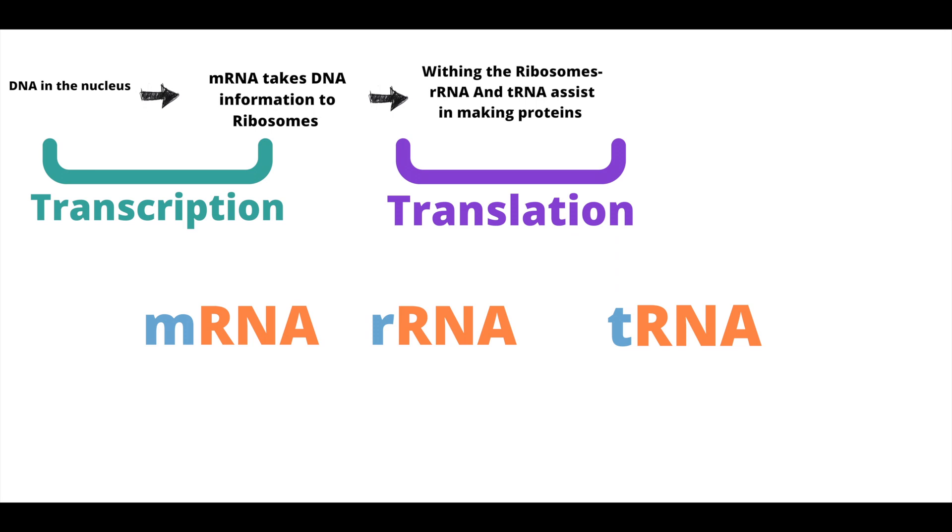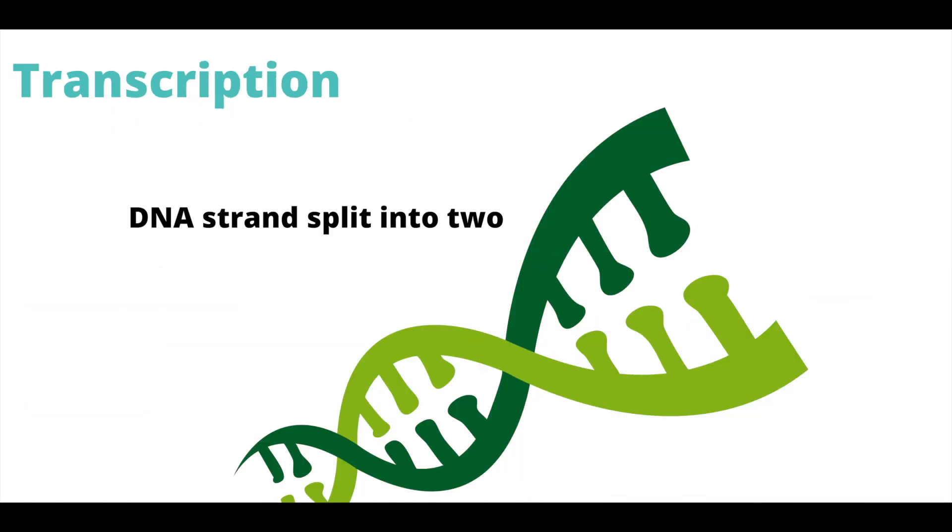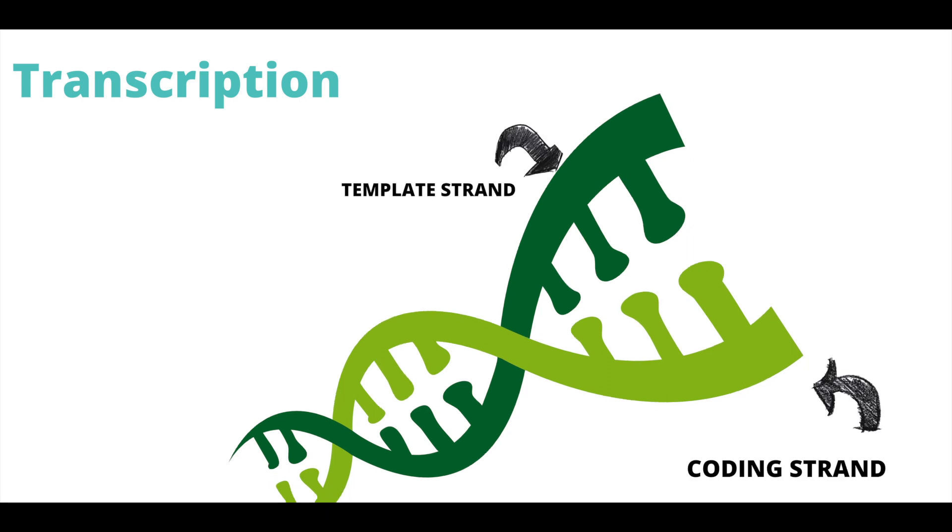During transcription, DNA makes mRNA, tRNA, and rRNA with the help of enzymes. The DNA double helix splits into two strands: the template strand and the coding strand. The template strand is used to create mRNA.